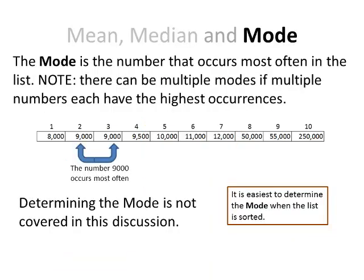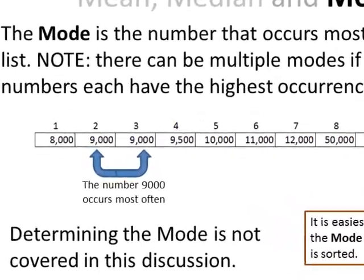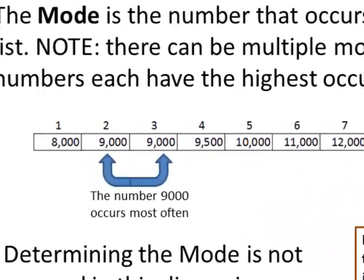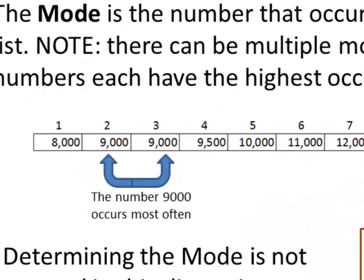The mode is the number that occurs most often in the list. In my list, 9,000 occurs twice. If there are two data items that occur most often, then I have a multi-mode. I'm not going to cover how to determine the mode in this discussion.